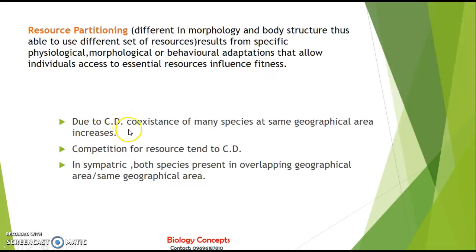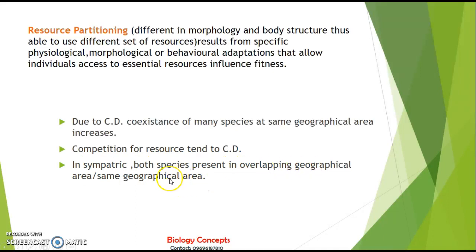Due to character displacement, coexistence of many species at the same geographical area increases. If two species are coexisting at a particular place, they have to differ in their characters if they are to survive in that geographical area. There will be competition for resources, and that competition tends to character displacement. Both species present in an overlapping or same geographical area are in sympatric association — sympatric means they are residing in the same geographical area.